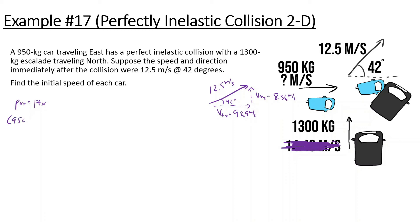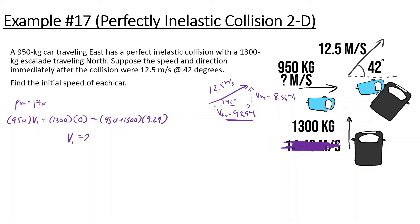Momentum initial in X equals momentum final in X. The first car (950 kg) is going V1 in the X direction. The Escalade (1300 kg) is only going north, so its X velocity is zero. After they crash, they stick together: 950 plus 1300 times 9.29. Dividing by 950 gives us 22 meters per second — that's how fast the first car was going.